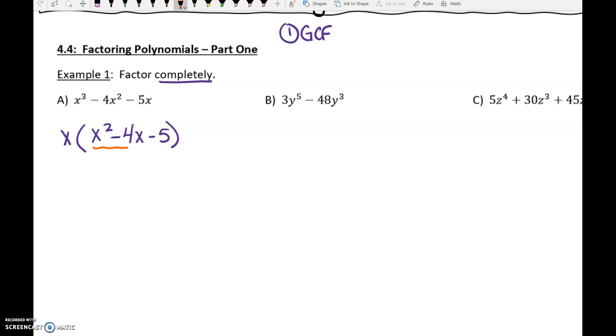Now we need to factor the stuff inside the parentheses. This is our standard: what times what is negative 5, what plus what is negative 4. I think that'd be 1 and 5. The 5 would have to be negative to get that negative 4. So that part's going to be x plus 1, x minus 5. And we have the x in front of all of that. The order of those things doesn't really matter.